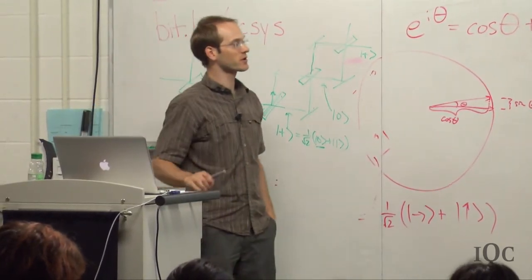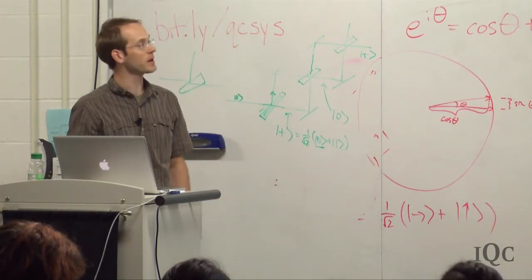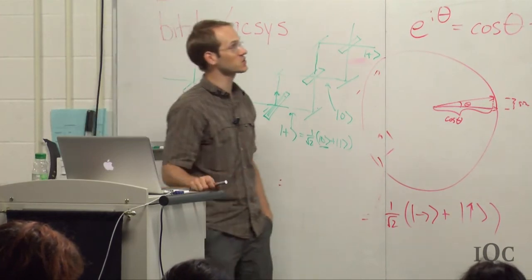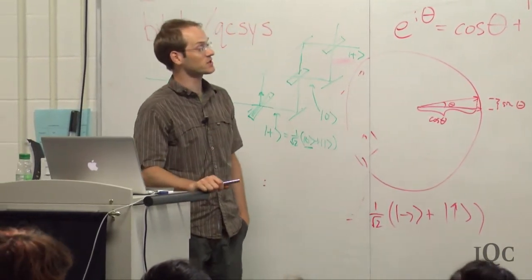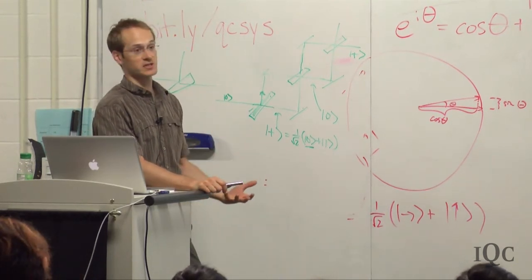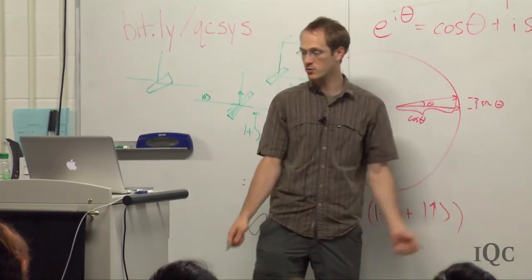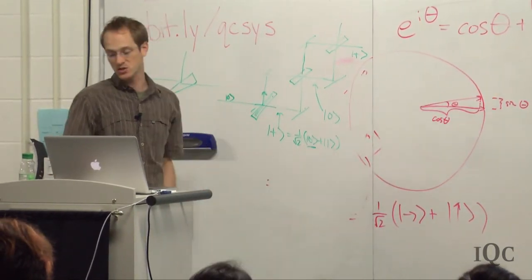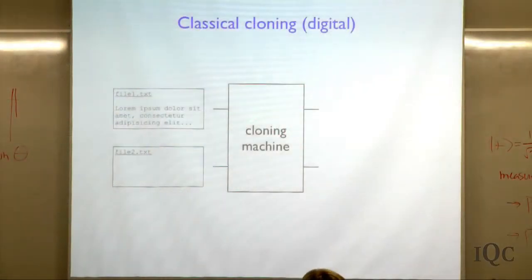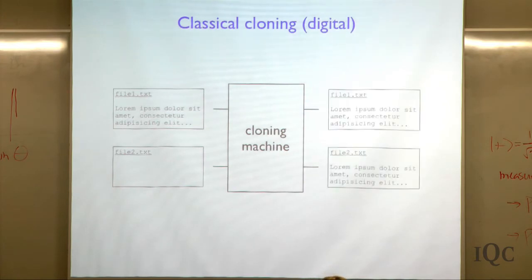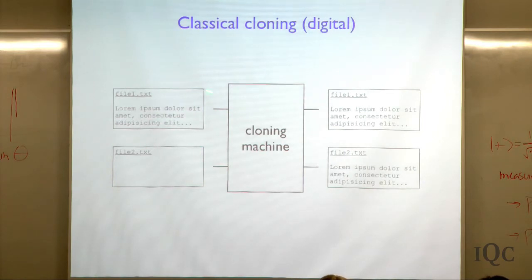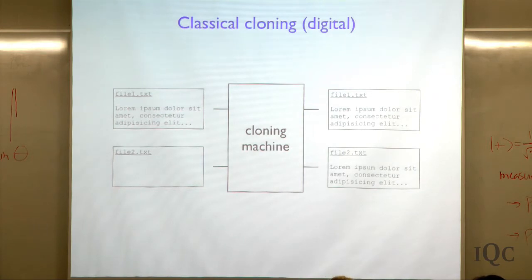To put this in terms which are more familiar, and where you actually can carry this out, think about the cloning of digital information. With a classical computer, imagine we have some digital information and we'd like to clone it. This is something you probably do all the time — you copy files and you're not surprised that you can do this. So you can have some file that you'd like to copy, maybe some empty file, and then you run it through the cloning machine, which is the CP command or something like that, and the output is two copies of the file. You really do completely know the state of this thing because it's just digital information, so it's no surprise that you can make a copy of it.